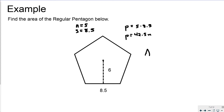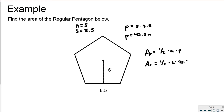Now I can calculate the area using A equals one half times the apothem times the perimeter. The apothem here is 6, and the perimeter is 42.5, so the area equals one half times 6 times 42.5. The area of this Pentagon is 127.5 units squared.